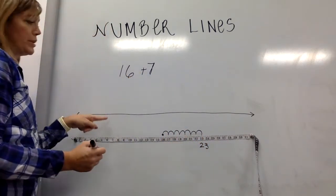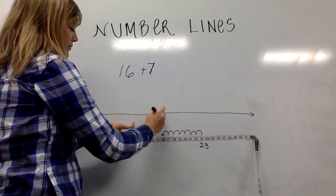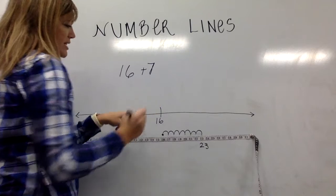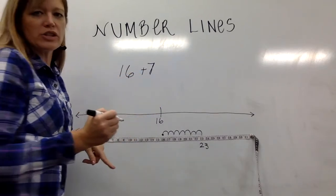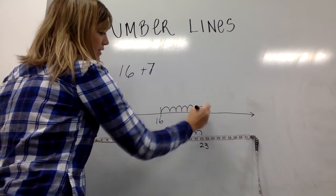I could show this on an open number line in the same way. I'm going to start out at 16. I label that as 16 and I think about the seven jumps that I need to make: one, two, three, four, five, six, seven.